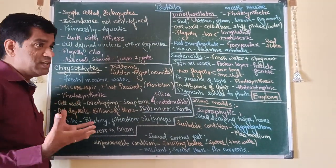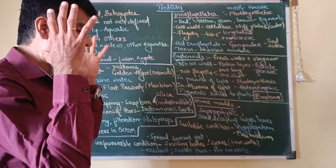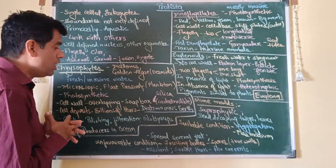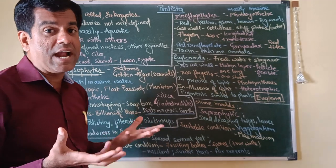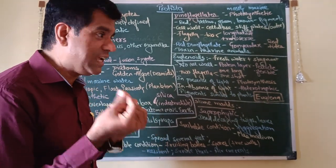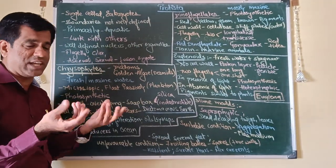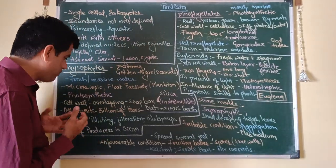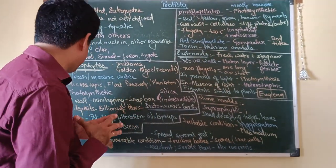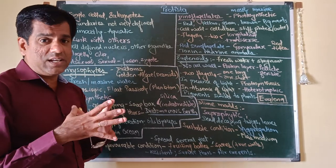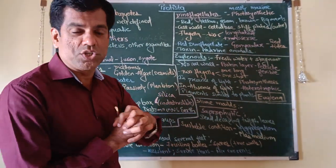Sediment deposits of these particular chrysophytes from billions of years ago are now forming what is called diatomaceous earth, which is now gritty in its texture and because of that is used in polishing and filtration of your oils and syrups.